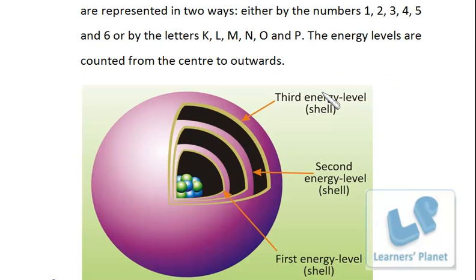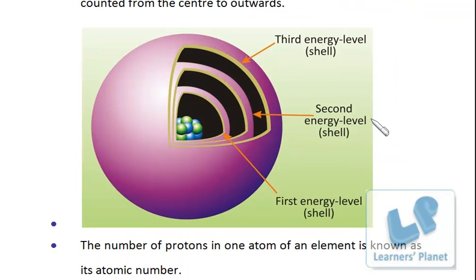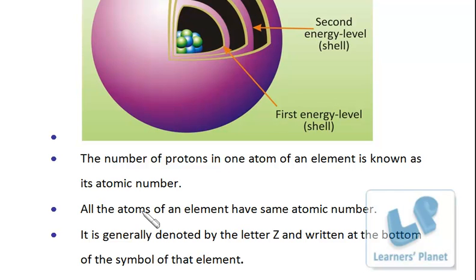The number of protons in one atom of an element is known as the atomic number. The atomic number is nothing but the number of protons in the atom. Since the number of protons equals the number of electrons, you can say atomic number is either the number of protons or the number of electrons — same thing. All atoms of an element have the same atomic number.